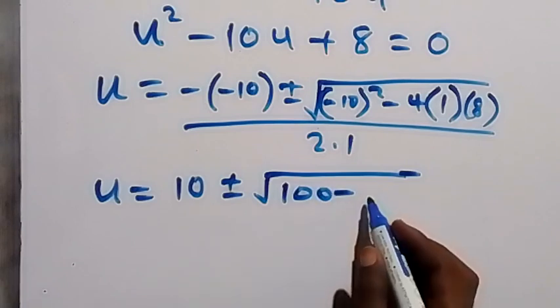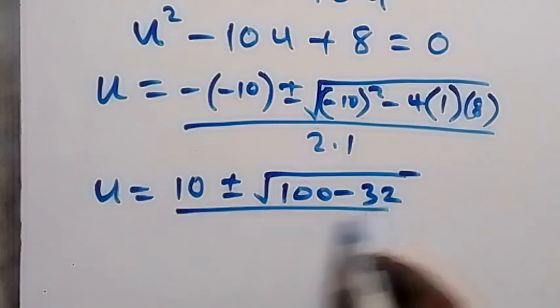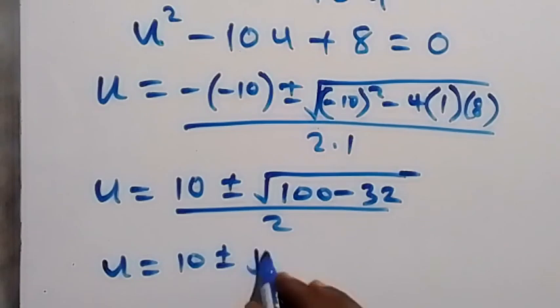Minus 4 times 8, that's 32. So when we simplify further this gives us u equals to 10 plus or minus square root of 68 over 2.